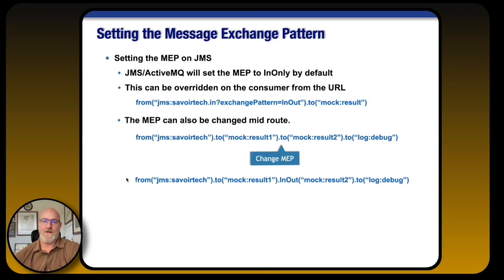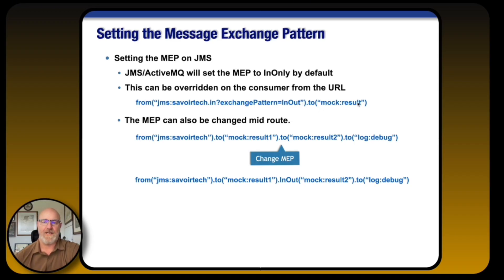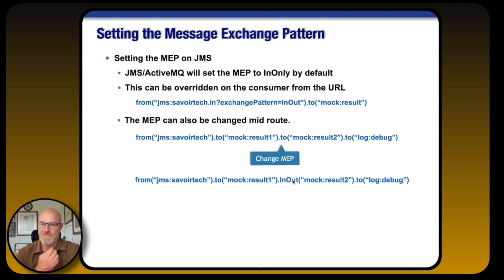You can set up and override the exchange pattern. For example, JMS is normally in-only, but you can override that by specifying in-out, which means it will respond back to the originating consumer. You can also change the MEP at different points throughout the route. Because there are almost infinite ways to do this, you really have to test to see exactly how it's going to function when you start changing the MEP mid-route. With great power comes great responsibility.